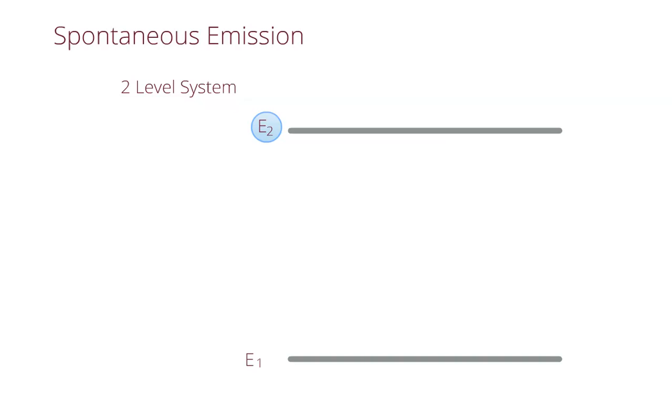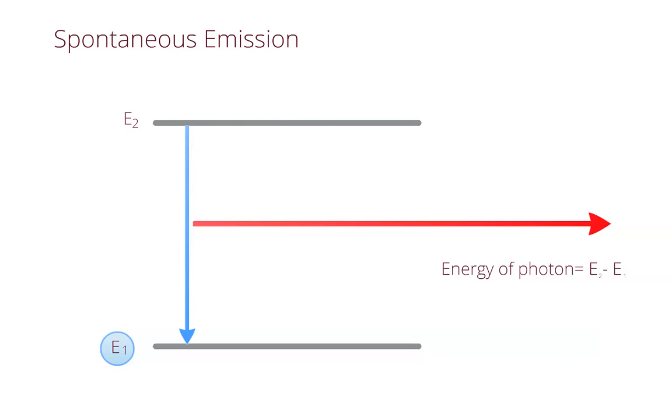If the atom is in a higher energy state, that is E2 as shown, then a photon can be emitted randomly with the energy corresponding to the difference between the two energy levels, which is E2 minus E1. This process occurs at random and wouldn't provide the intensity or the coherence of photons we require for a laser.